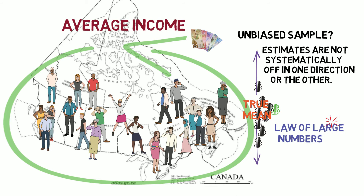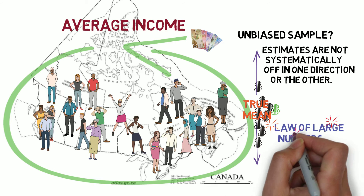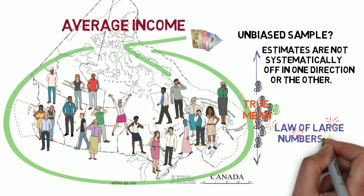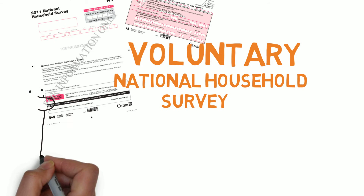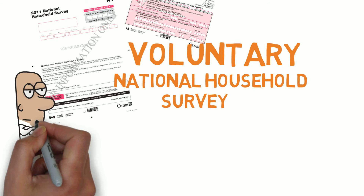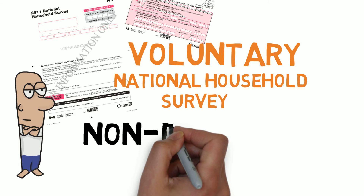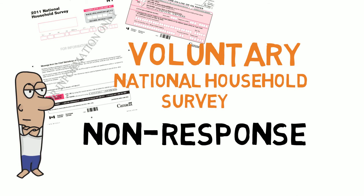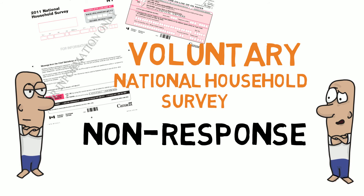With a sample of 20% of the Canadian population chosen at random, we can expect the sample mean income will be very close to the true population mean. What happens with a voluntary survey? A sizable portion of people do not answer such surveys. If people refuse to answer at random, then non-response would not cause a problem — we would just not get as large a sample.